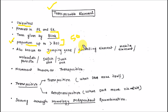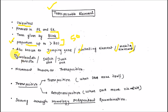Transposable elements are also known as jumping genes, controlling elements, mobile elements, or mobile molecular parasites, because transposons can cause various diseases in organisms. They are also referred to as selfish DNA or junk DNA. The movement of transposable elements is known as transposition.